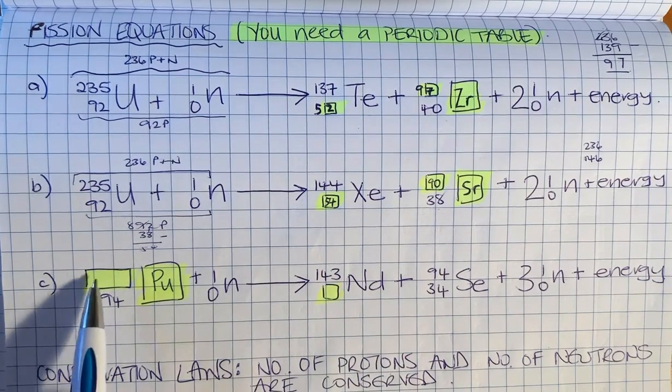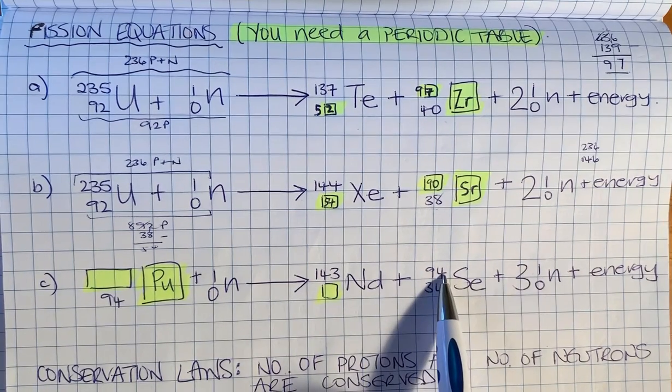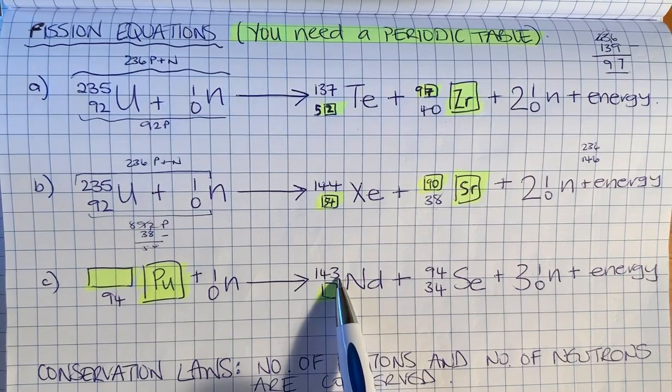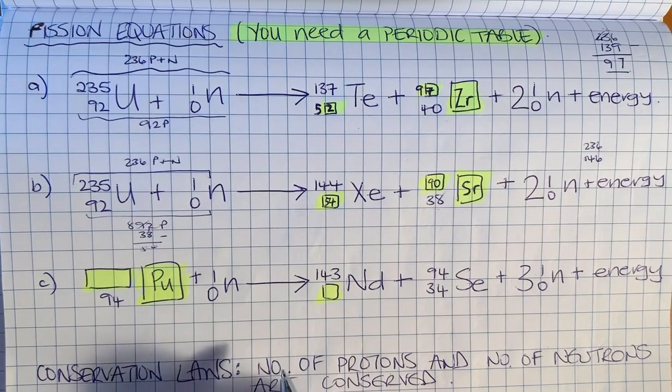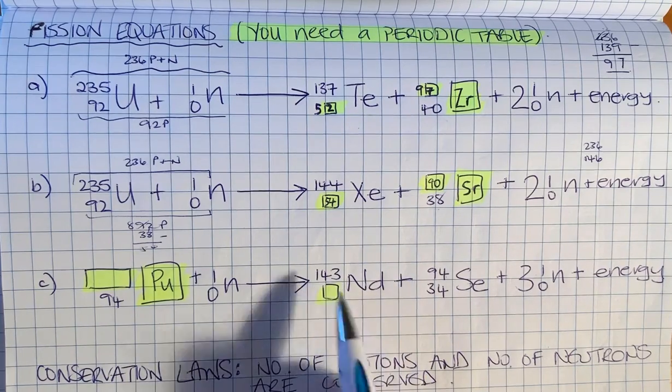The way we work out its mass number is by adding 3 to 94, giving us 97, and then adding that to 143. So that's 240.